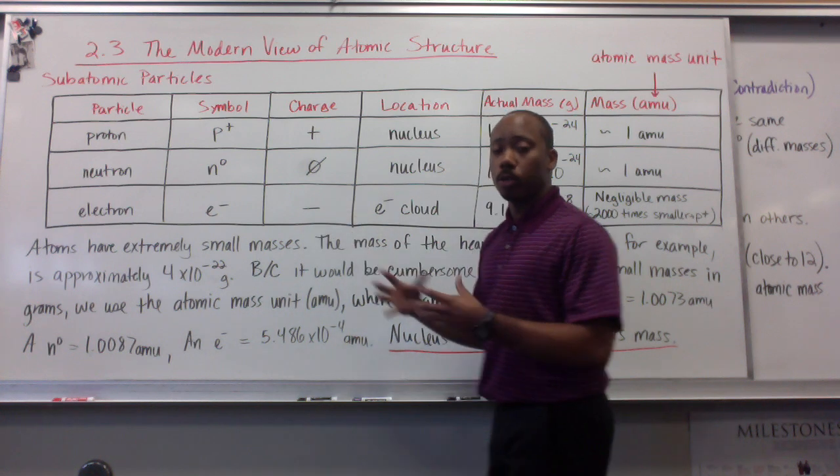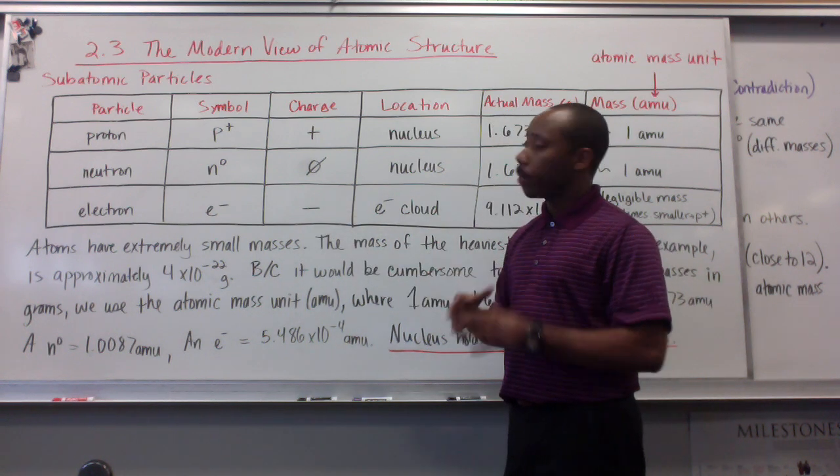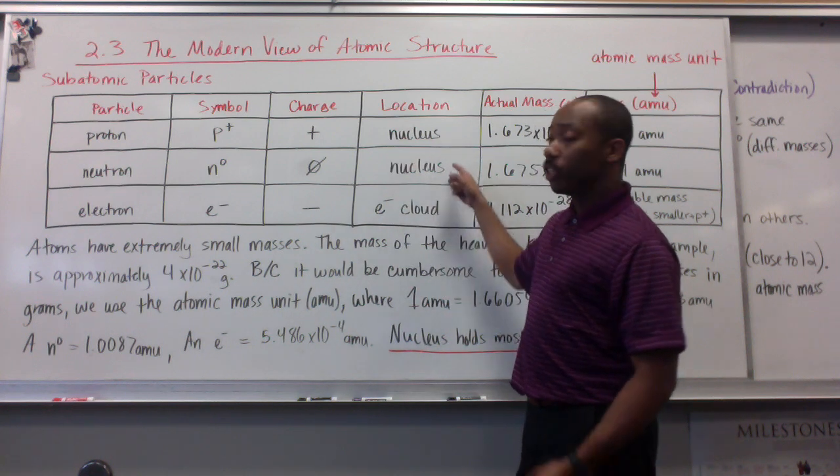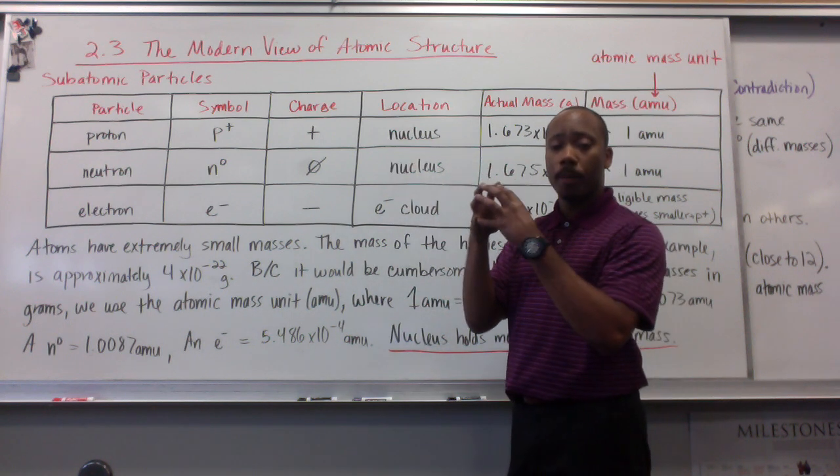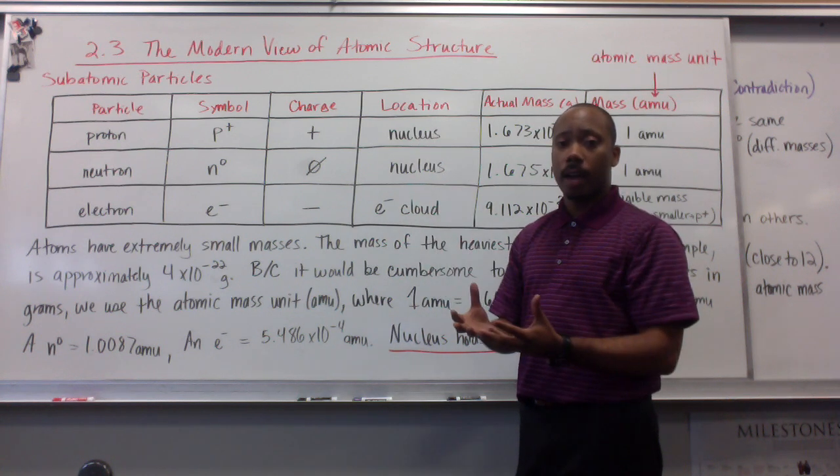Now, these particles are found in different places in the atom, or some the same. Protons and neutrons are both found in the nucleus, in the center compartment of the atom. And the electron is found outside of the atom, in the electron cloud.